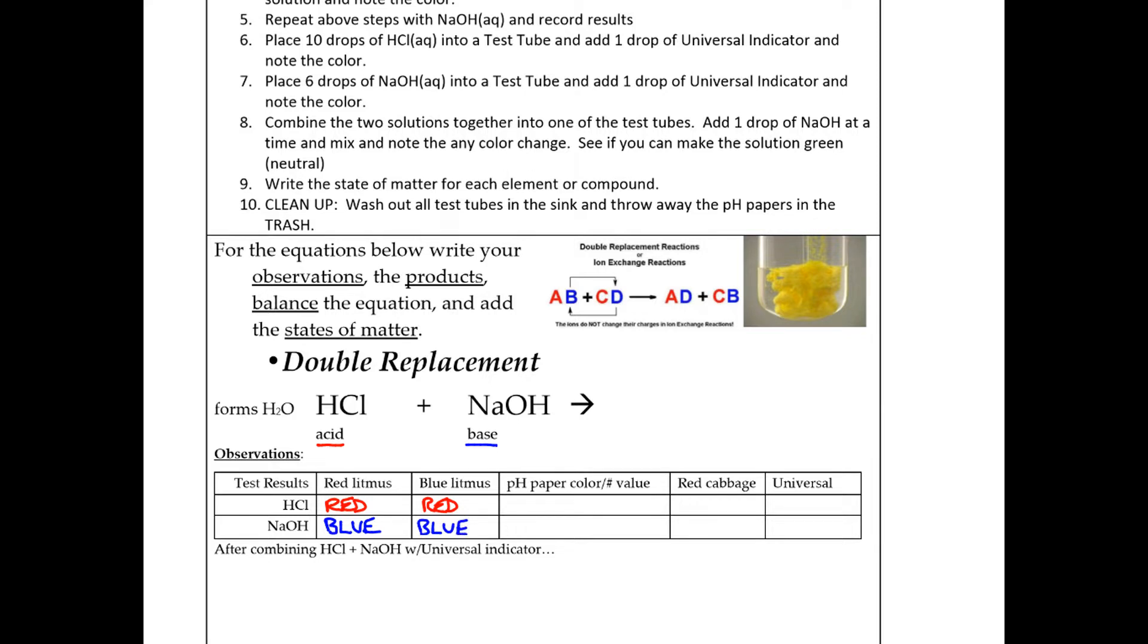So if you have both papers turn red, it's an acid. If you take both papers and they turn blue, it's a base. If you have the papers and the red stays red and the blue stays blue, then that would be something that's neutral. So that's why you really have to have both litmus papers to test. It's not enough just to use one type of litmus paper.